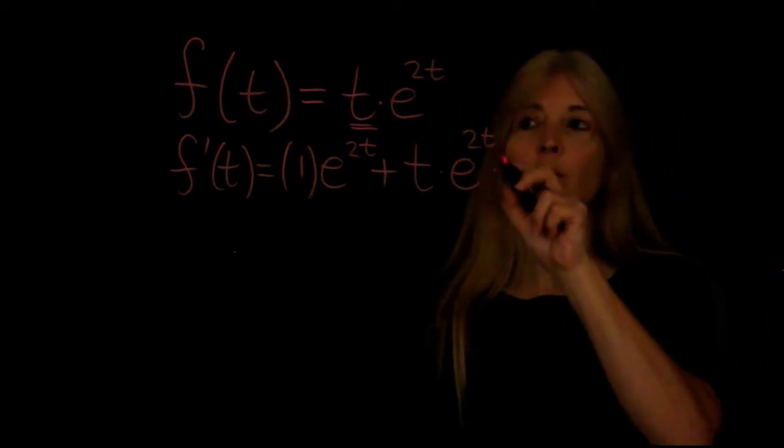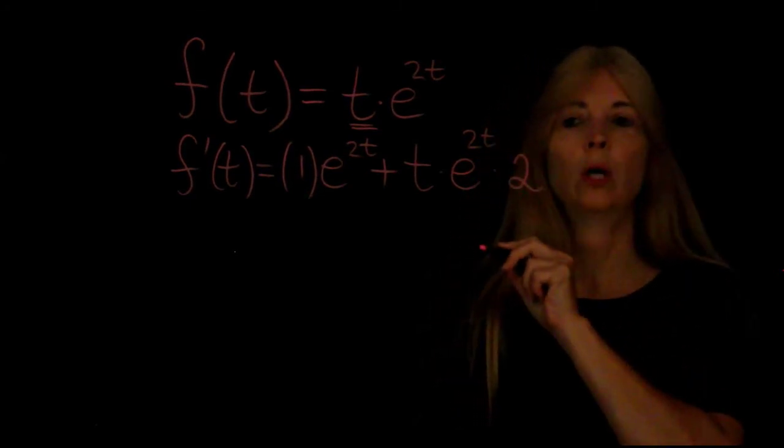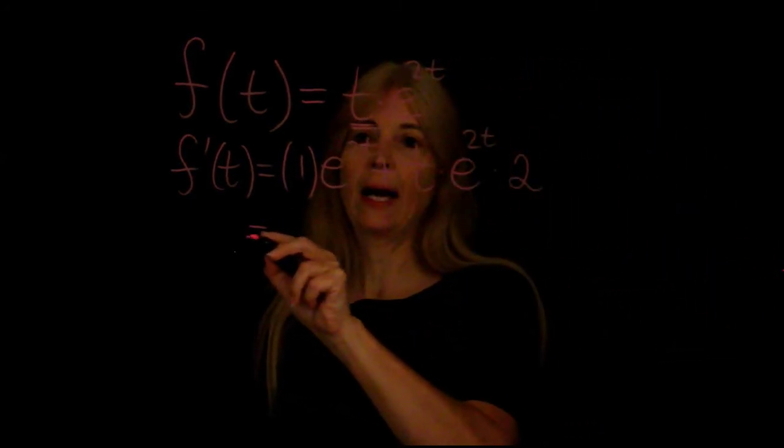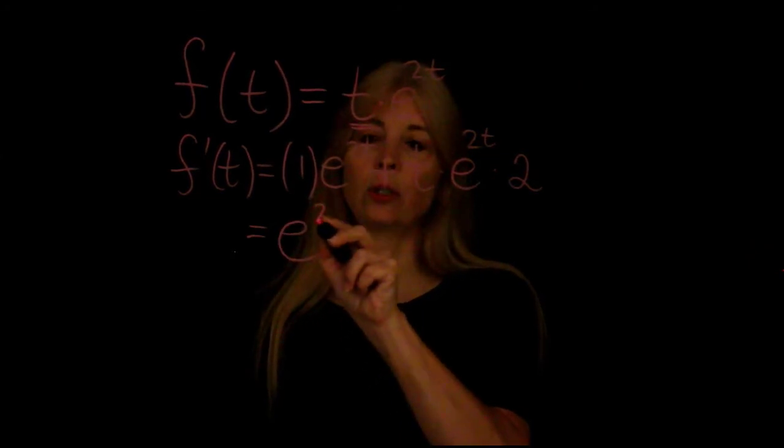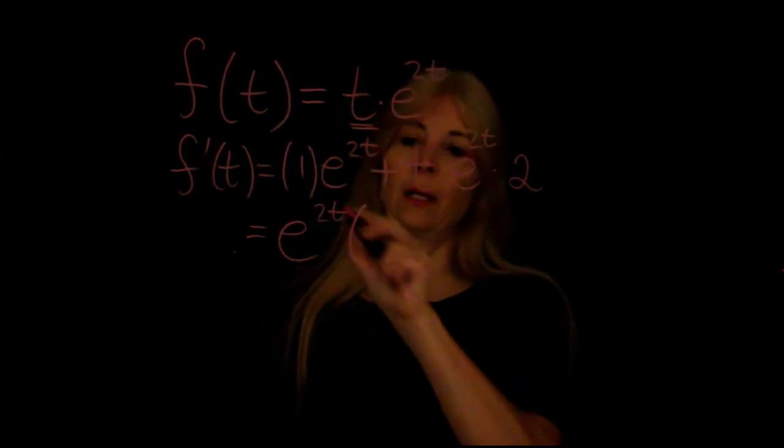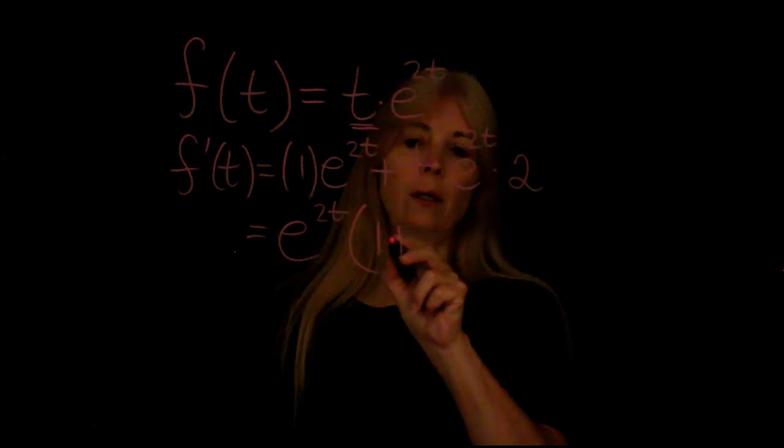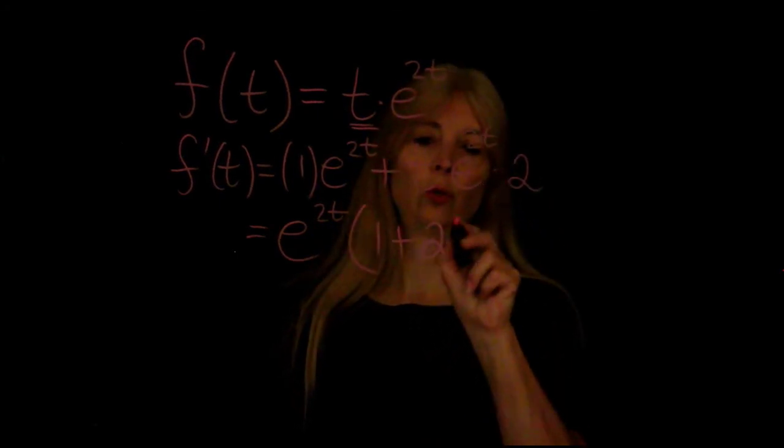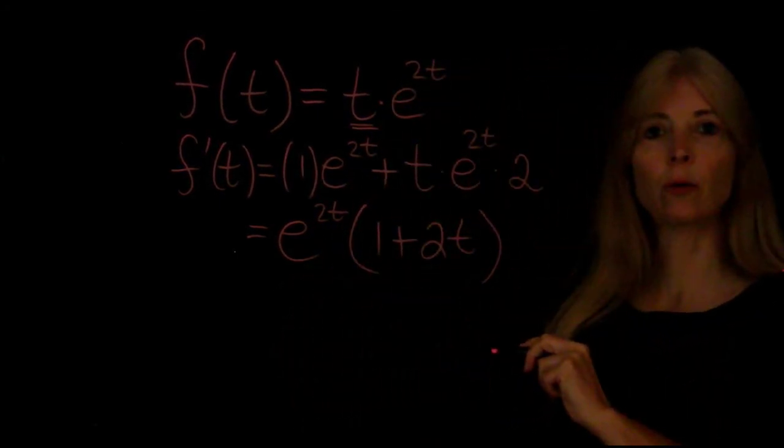So the derivative of 2t would just be 2 and then I could factor out an e to the 2t and that would leave me with 1 plus 2t and that's the product rule.